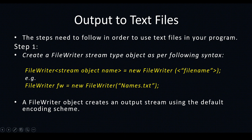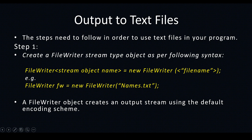You need to first create a FileWriter stream. Here 'FileWriter' is the keyword — note the capital F and capital W, written as a single word. The syntax is: FileWriter streamObjectName = new FileWriter(textFileName). For example: FileWriter FW = new FileWriter("names.txt"). If names.txt is not available, it will be automatically created. A FileWriter object creates an output stream using the default encoding scheme, which is Unicode — Java uses Unicode.